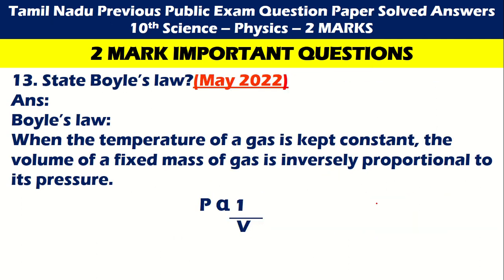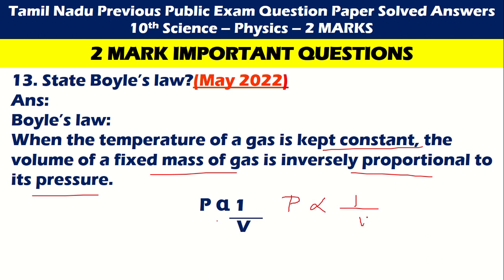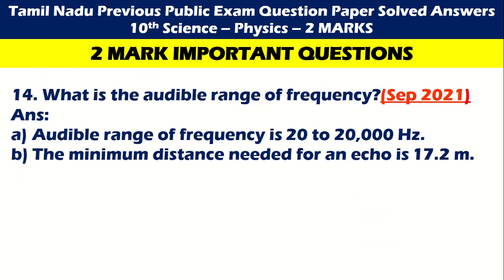Next: Boyle's Law — when the temperature of a gas is kept constant, the volume of a fixed mass of gas is inversely proportional to its pressure. So pressure P is inversely proportional to volume V, meaning P ∝ 1/V. Next: The audible range of frequency is 20 to 20,000 Hertz. The minimum distance needed for an echo is 17.2 meters.